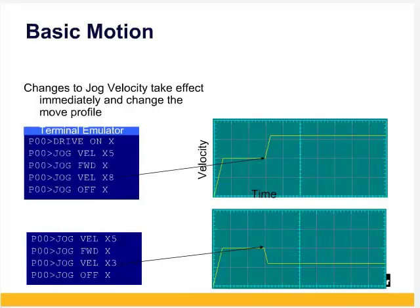After starting motion with jog forward or jog reverse, a different velocity can be commanded with jog VEL. And the axis will accelerate using jog ACC to the new higher velocity or decelerate using jog DEC to the new lower velocity.